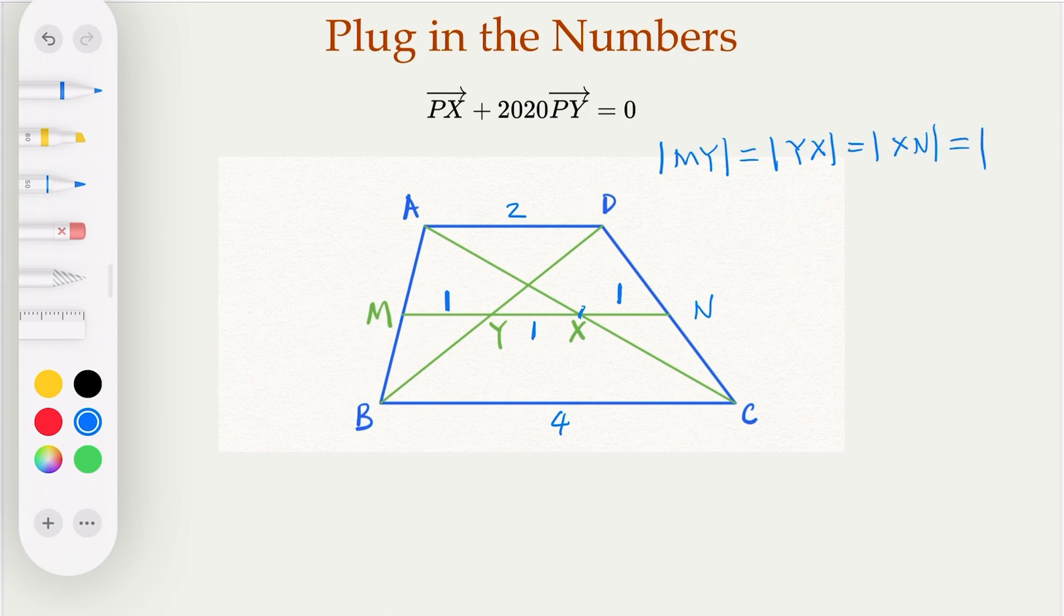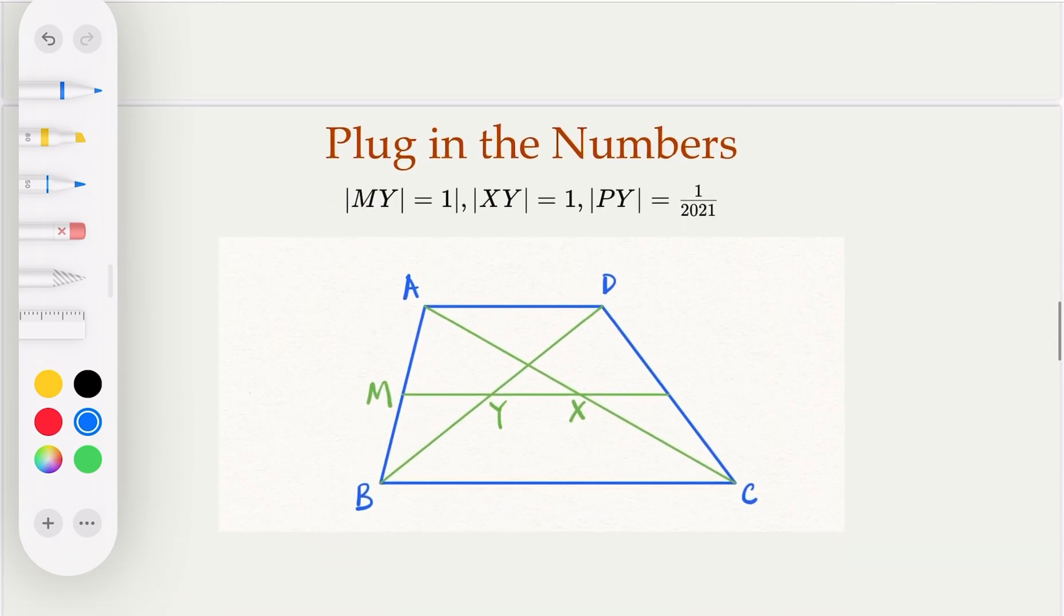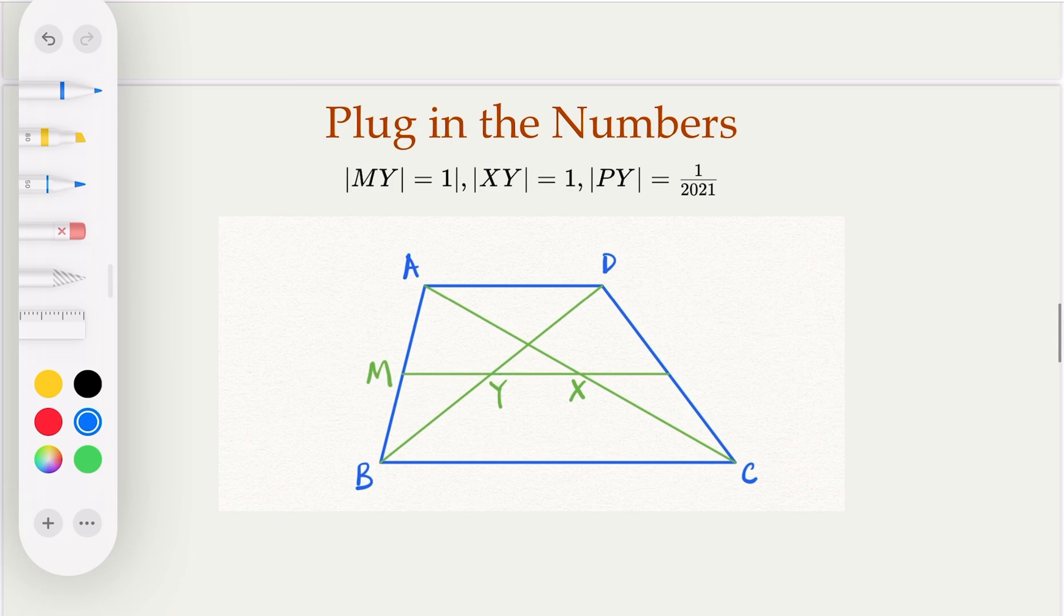So earlier, we know that the magnitude of PX is this much bigger in the opposite direction. So P is here. So P is over here. Let's recap what we have. So we claim that this P is here. We claim if this is two, this is four, this is all one, one here.